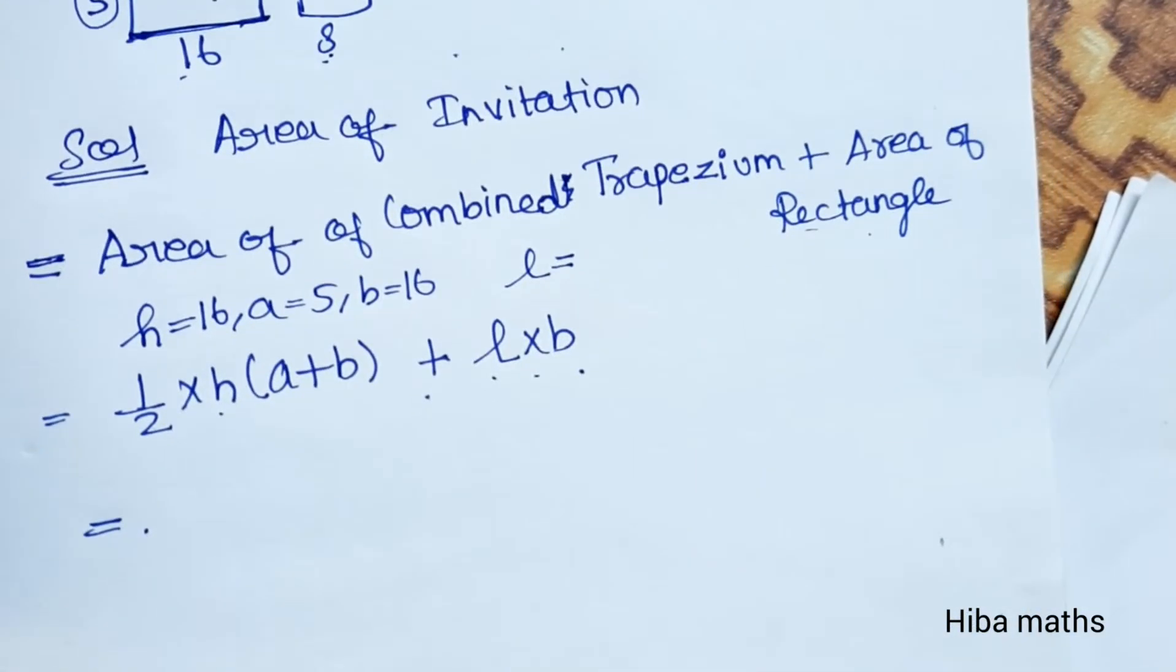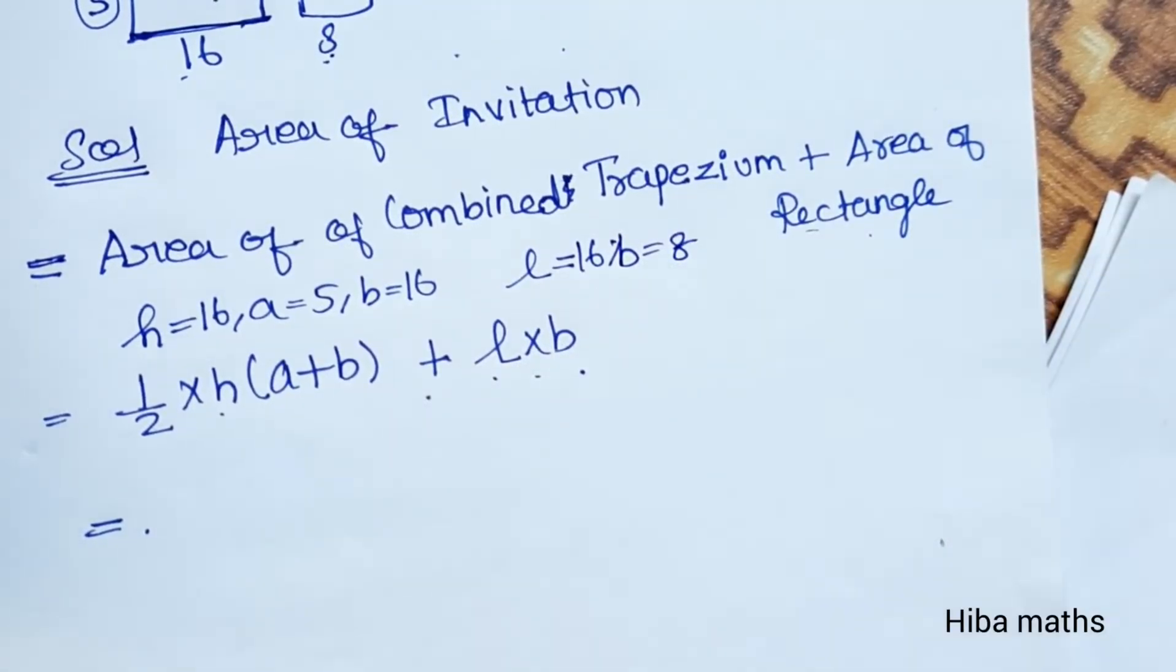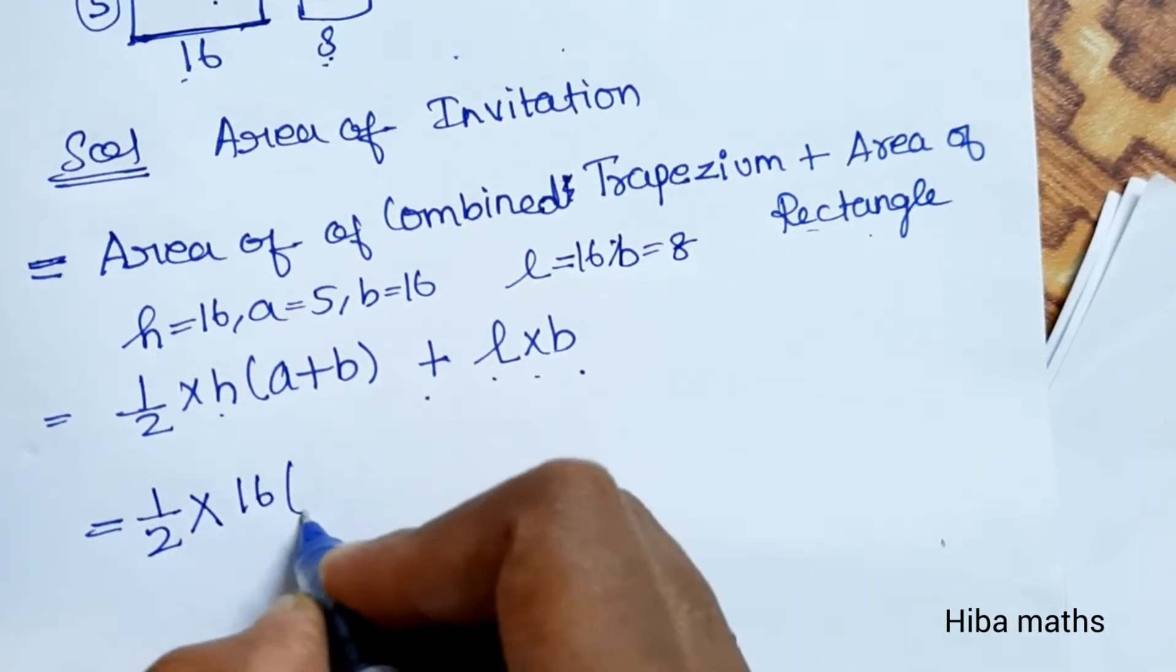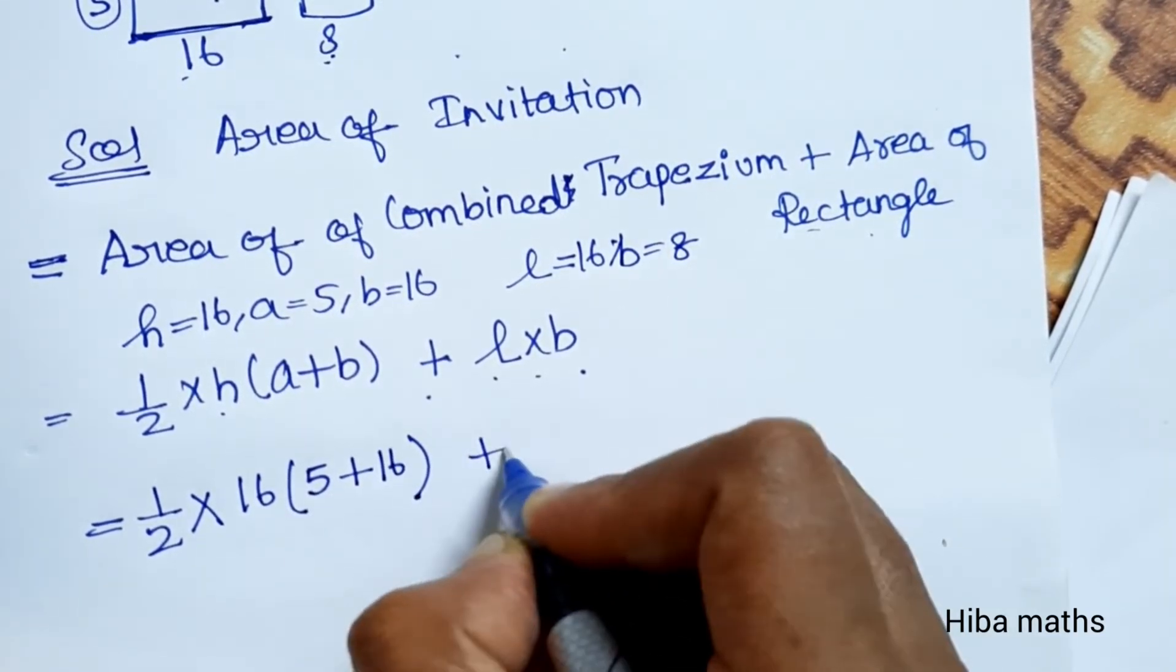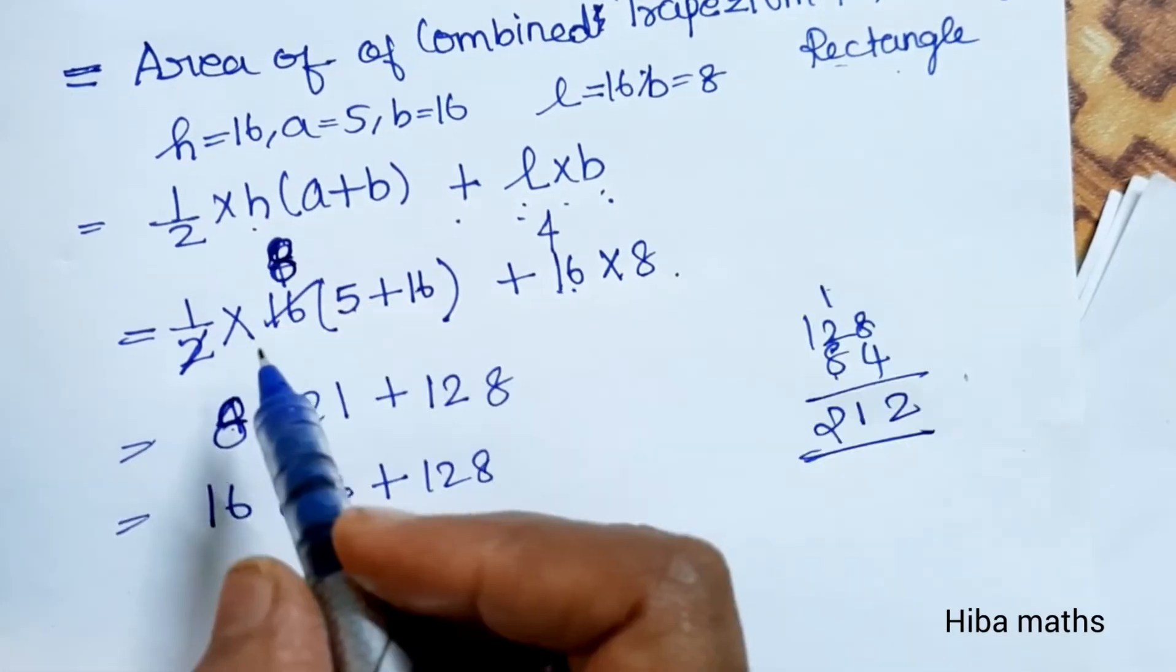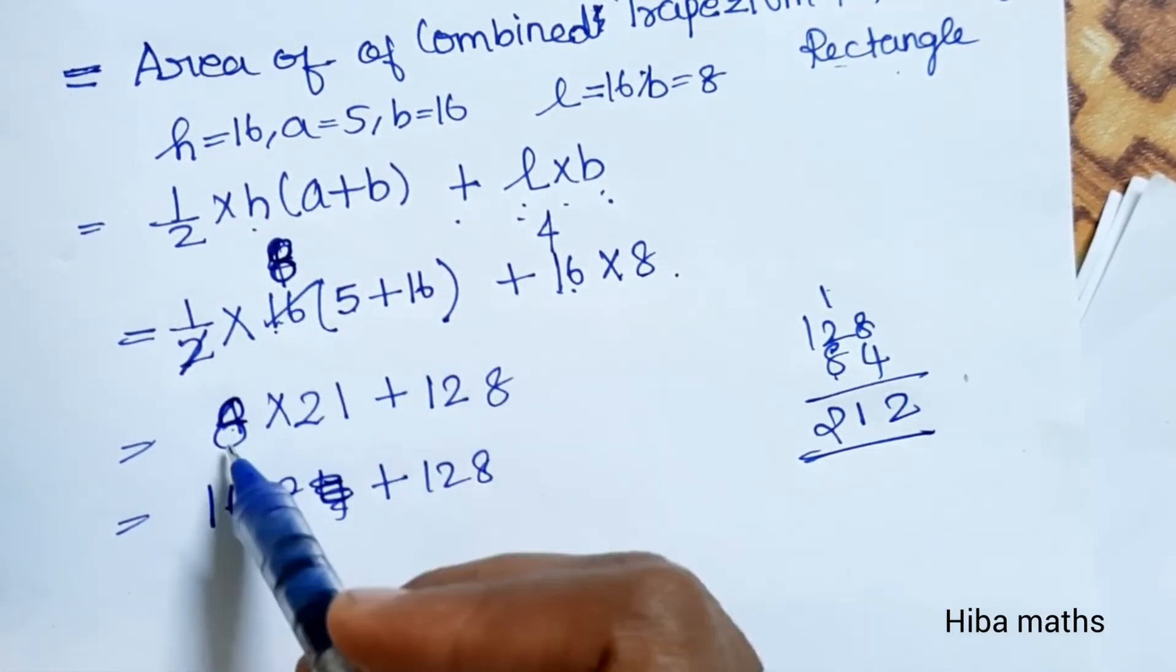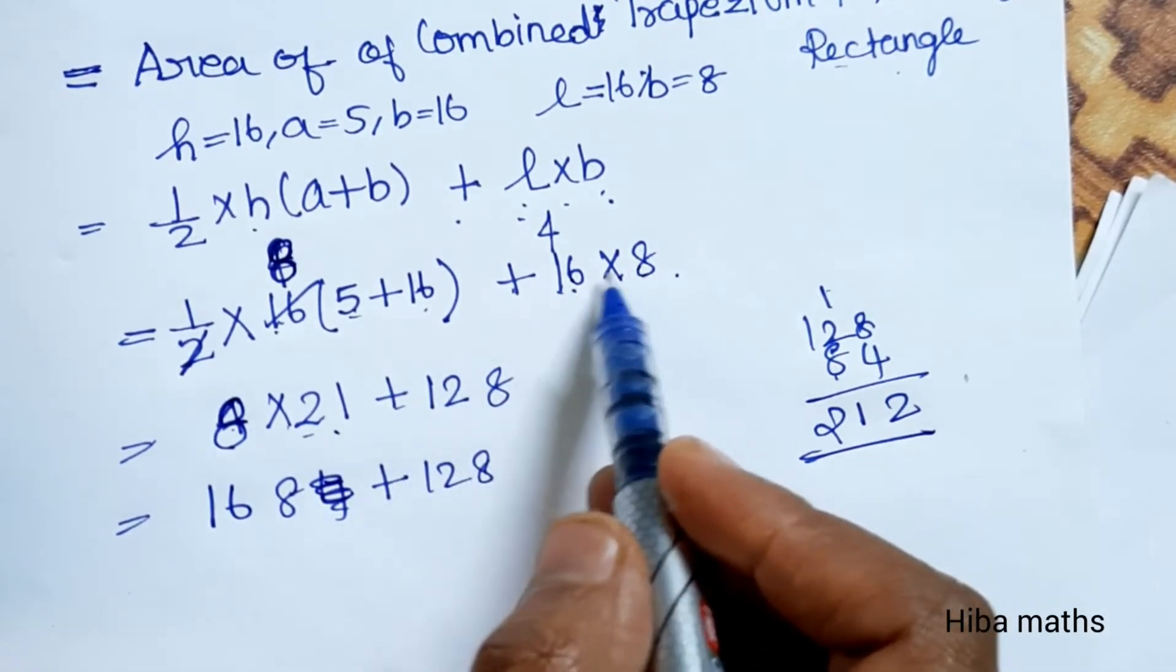Let's substitute in the formula: one-half into H which is 16, into A plus B which is 5 plus 16, plus L times B which is 16 into 8. Two cancels with 16, giving us 8. Now we have 8 times (5 plus 16 is 21), plus 8 times 6 is 48.